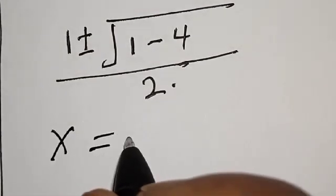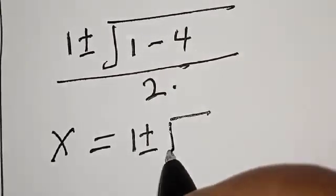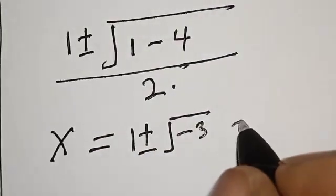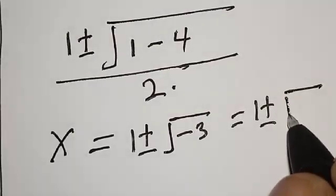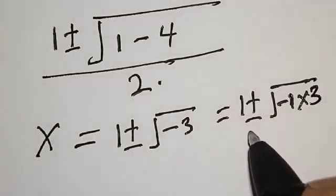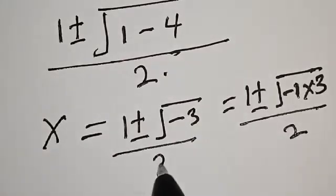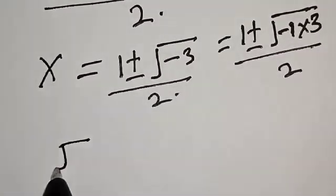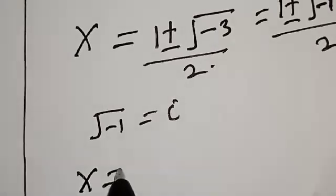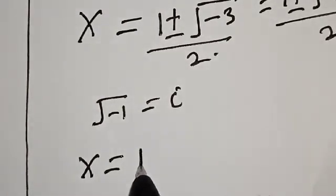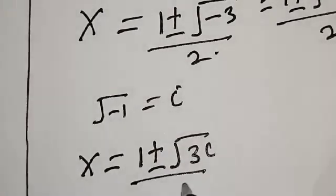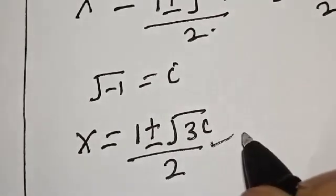Then s equals 1 plus or minus square root of 1 minus 4, over 2, which gives s equals 1 plus or minus square root of minus 3, over 2. Remember that square root of minus 1 is equal to i, so we have s equal to 1 plus or minus square root of 3 times i, over 2. This is a complex solution.